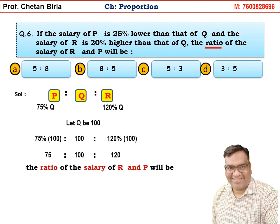Now the ratio of R to P: R is 120, P is 75. Finding common factor: 120 = 15 × 8 and 75 = 15 × 5. So the ratio simplifies to 8 is to 5. The ratio of salary of R and P is 8 is to 5, so Option B is the correct answer.